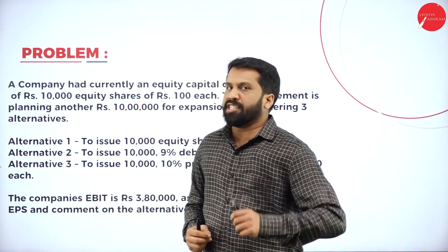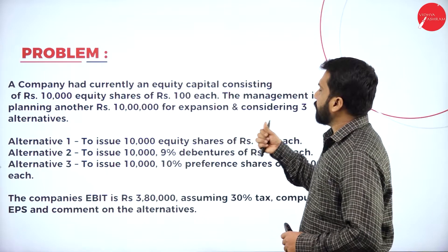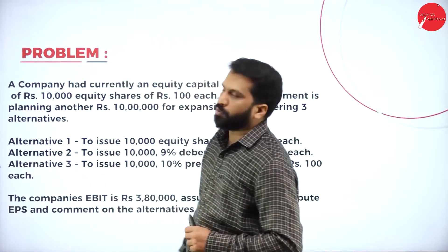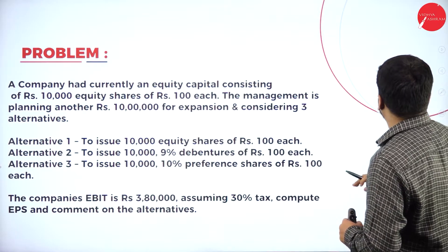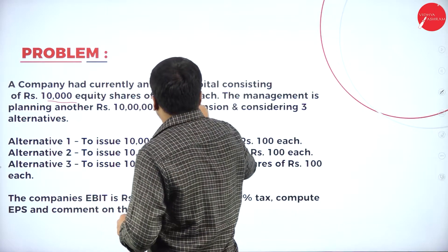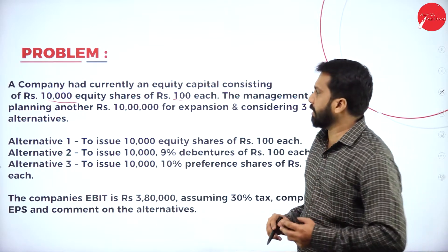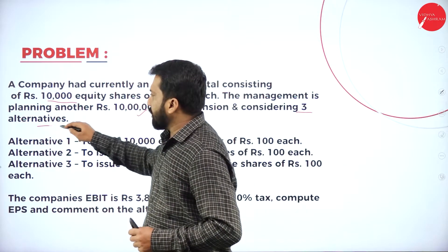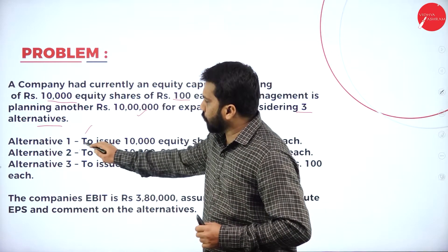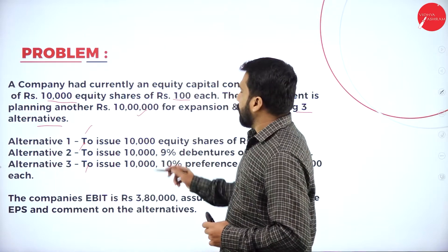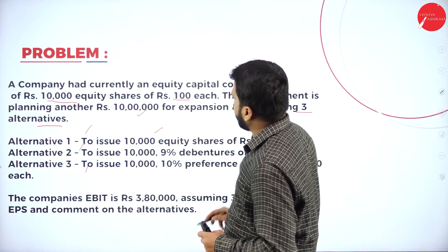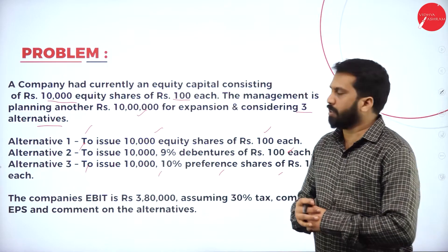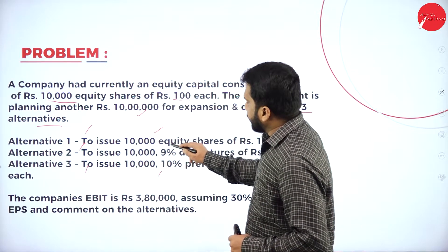Problem. In this problem, a company currently has equity capital consisting of 10,000 equity shares of Rupees 100 each — that is 10,000 into 100, which is 10 lakh. Now, they need 10 lakh for expansion and are considering three alternatives. Alternative 1: issue 10,000 equity shares of Rs. 100. Alternative 2: 10,000 debentures of Rs. 100. Alternative 3: 10,000 preference shares of Rs. 100. The debentures carry 9% interest.